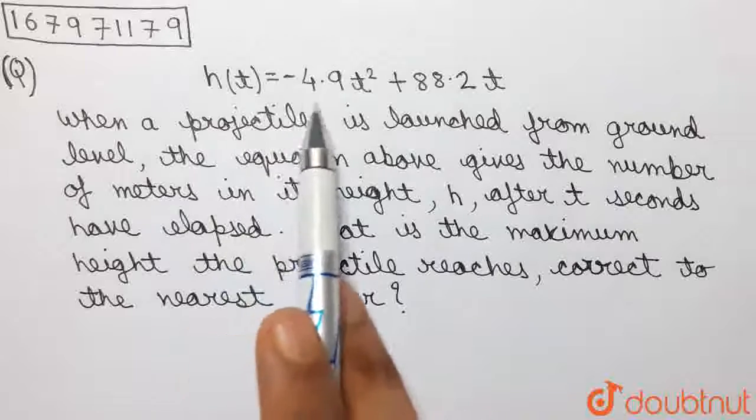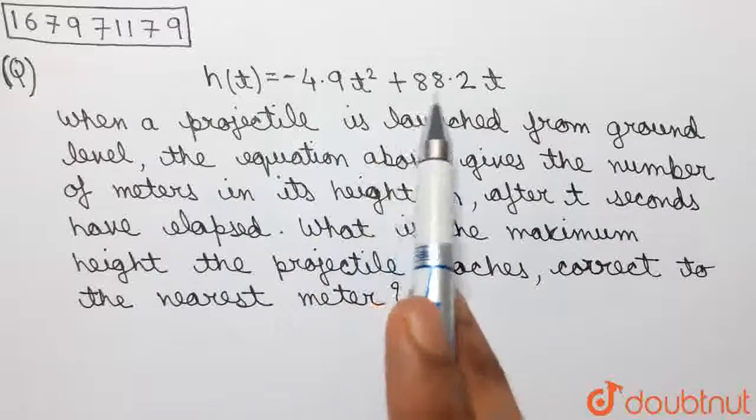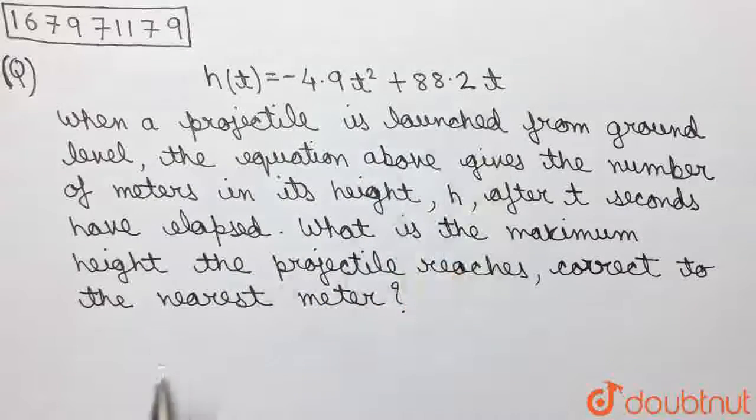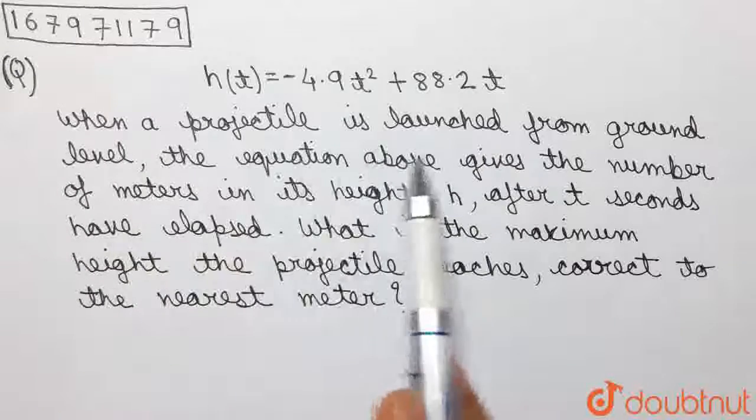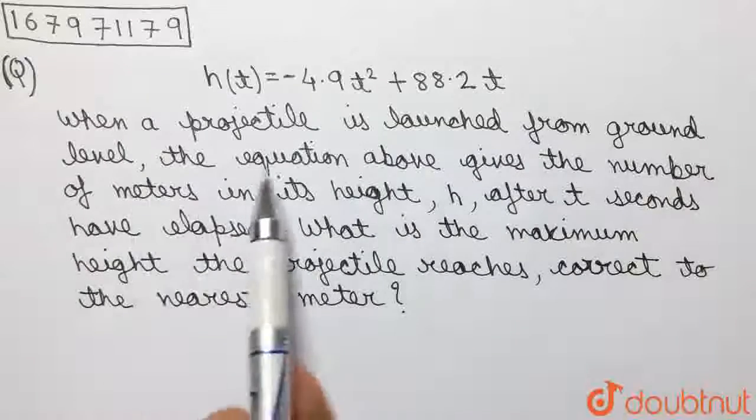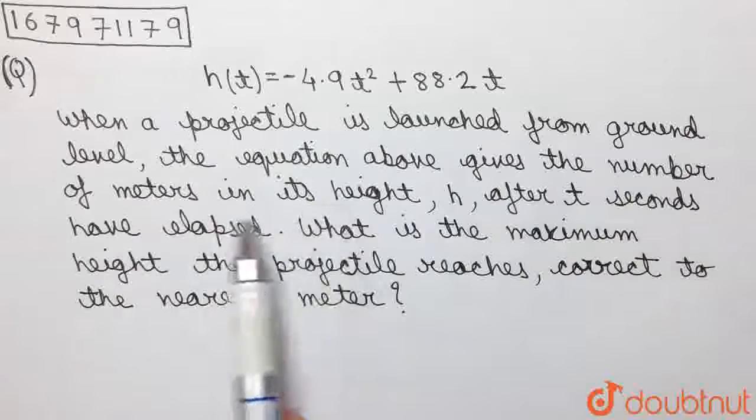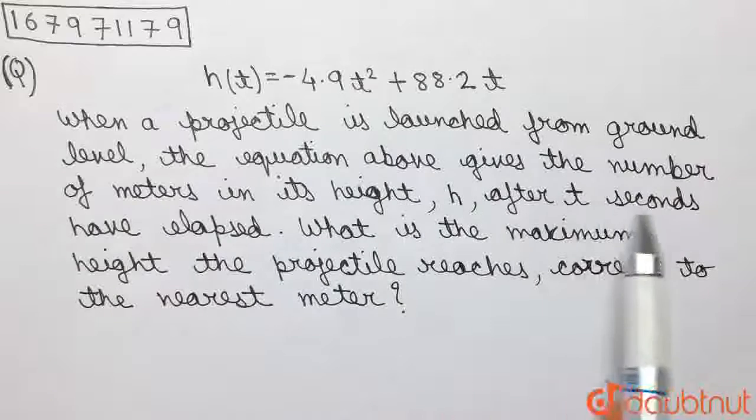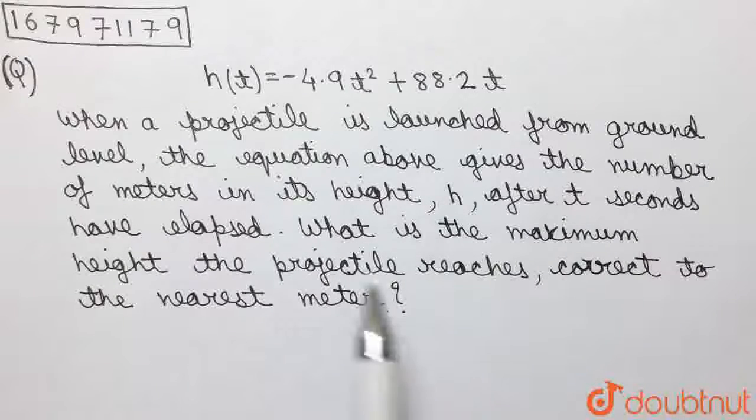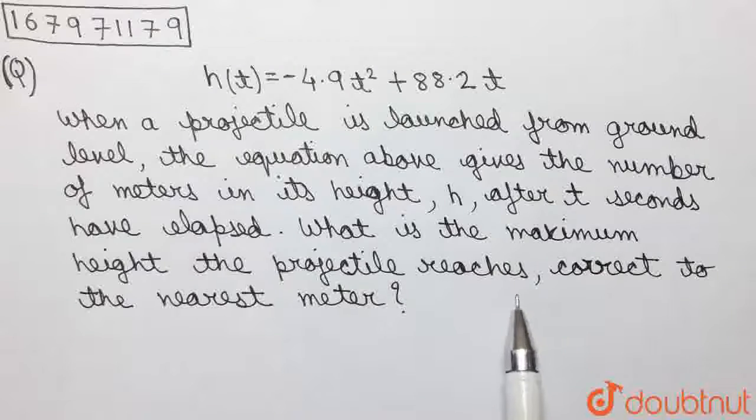h(t) = -4.9t² + 88.2t. When a projectile is launched from ground level, the equation above gives the number of meters in its height h after t seconds have elapsed. What is the maximum height the projectile reaches correct to the nearest meter?